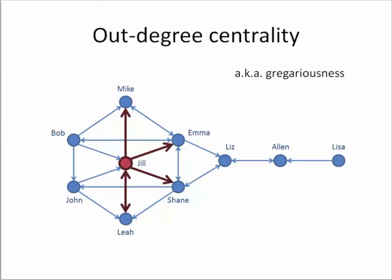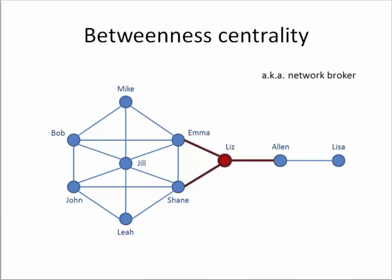Of course, degree centrality is an important measure indicating the overall number of connections of an individual node. However, it may still not be quite indicative of the importance of that node for controlling some flow happening in the network. We can see that Jill, although having the highest number of connections, is still not the node that can easily connect to anybody else in the network. Therefore, there is another measure called betweenness centrality, which indicates the ease of connection with anybody else in the network and, in particular, the ability to connect potentially small sub-communities or sub-clusters of nodes.